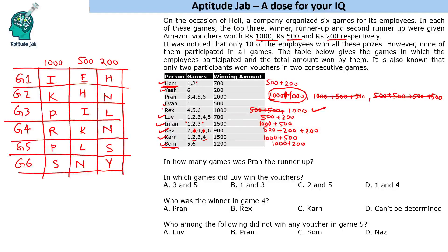Now let us answer the questions. In how many games was Pran the runner-up? Pran won 1000 and 1000, so he was never the runner-up — the answer is zero. In which games did Love win the vouchers? Love won in the third and fifth games. Who was the winner in game 4? Rex is the winner. Who did not win any voucher in game 5? Game 5 has P, L and S — Naz did not win any voucher in game 5.